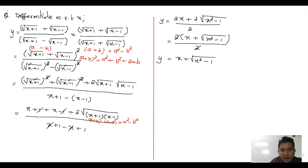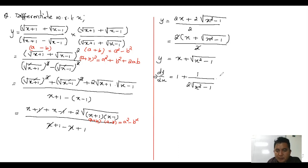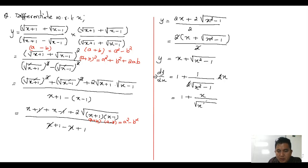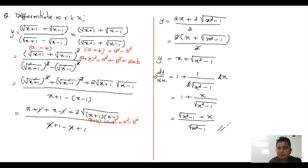Now let's differentiate. dy/dx equals the derivative of x, which is one, plus the derivative of root of x squared minus one, which is one over two root of x squared minus one, times the derivative of the inside, which is two x. The two cancels, giving one plus x divided by root of x squared minus one. Taking the LCM, the final answer is: dy/dx equals root of x squared minus one plus x, all over root of x squared minus one.